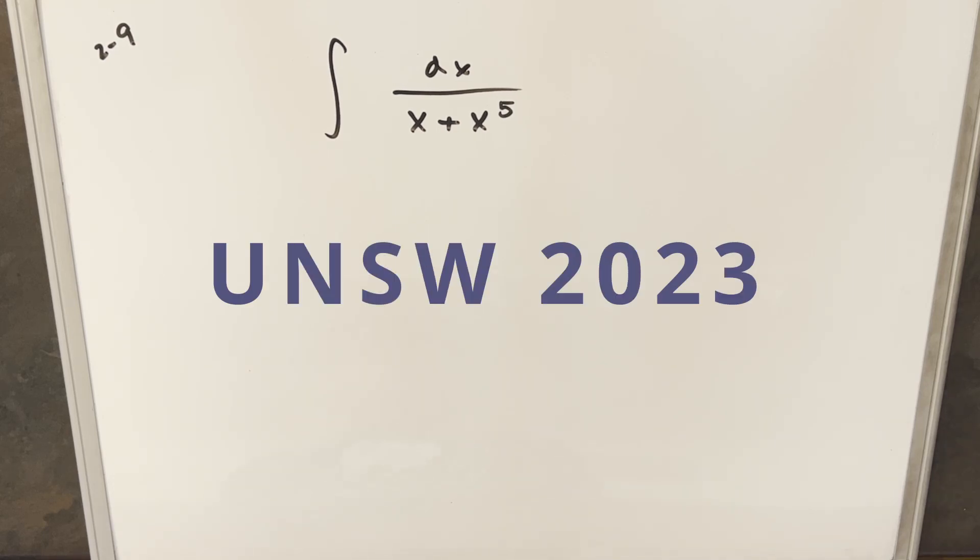Okay, we have another problem on the board from the UNSW Integration Bee 2023. This one's from round two, problem nine. We have the integral of dx over x plus x to the fifth.